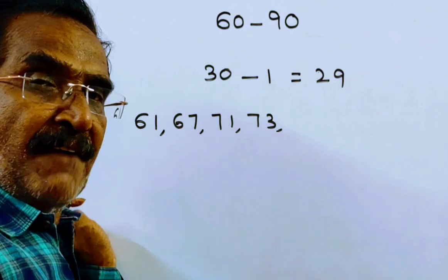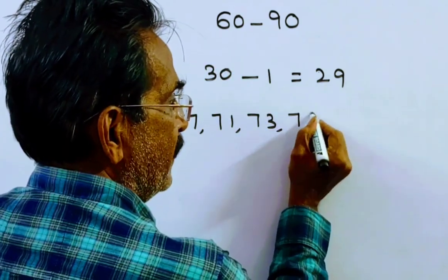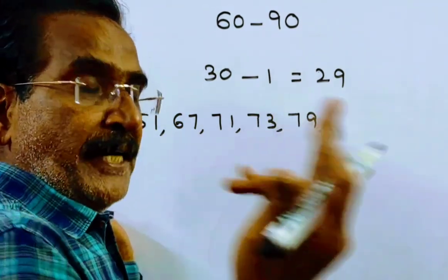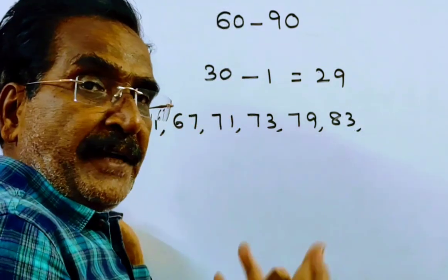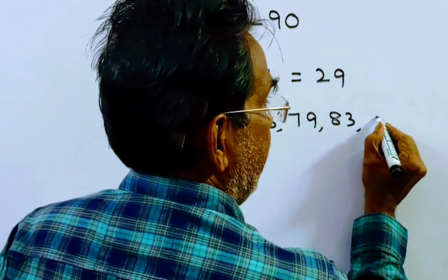79 is the prime number. And in the 80s, 83 is prime number, and 89 is the prime number.